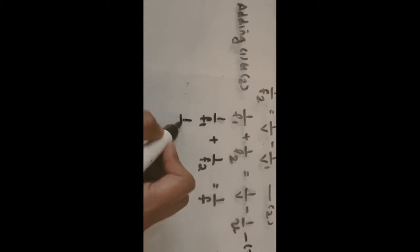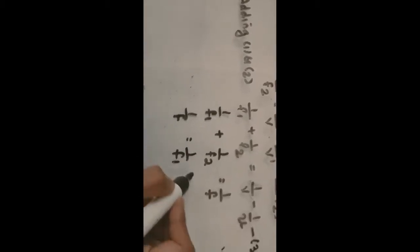For N thin lenses in contact, this equation can be generalized as: 1/F = 1/F1 + 1/F2 + 1/F3 + … + 1/Fn. Similarly, the equivalent power of a combination of N lenses in contact is given by P = P1 + P2 + … + Pn. So this is about equivalent focal length and power of two thin lenses in contact.